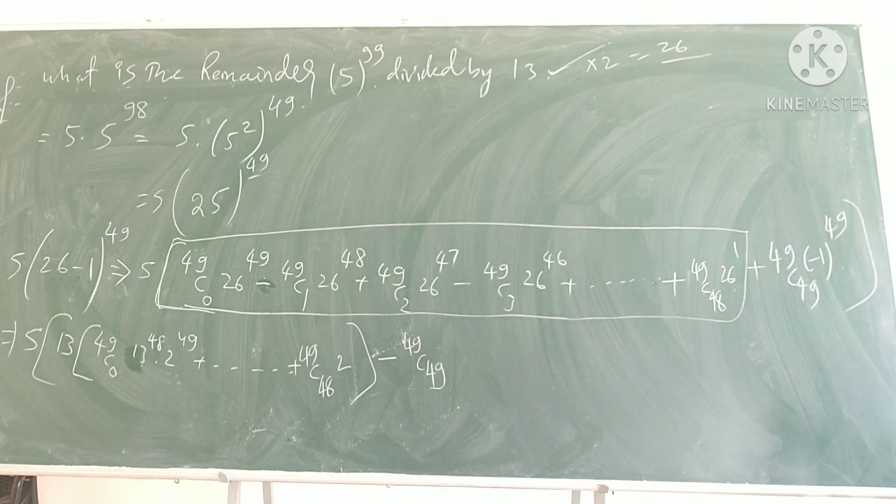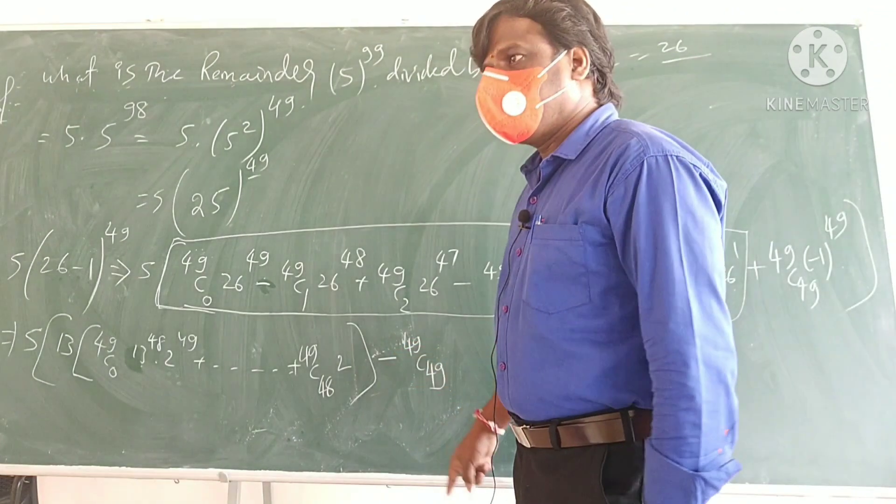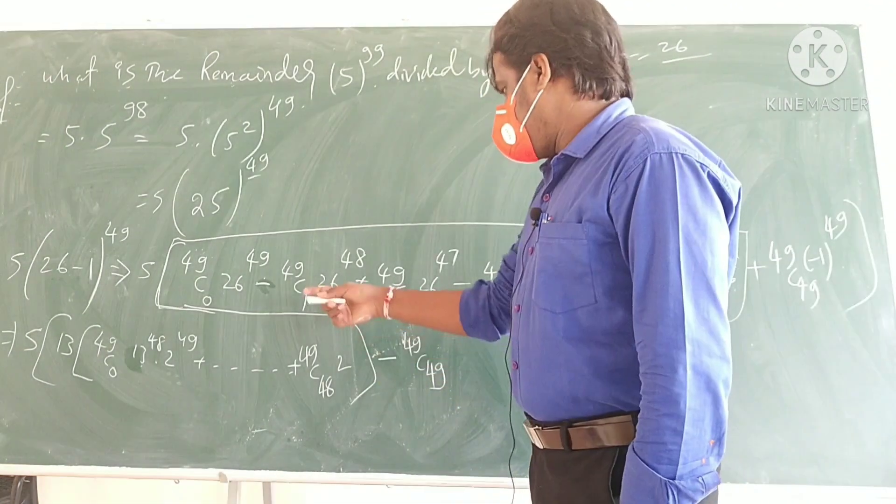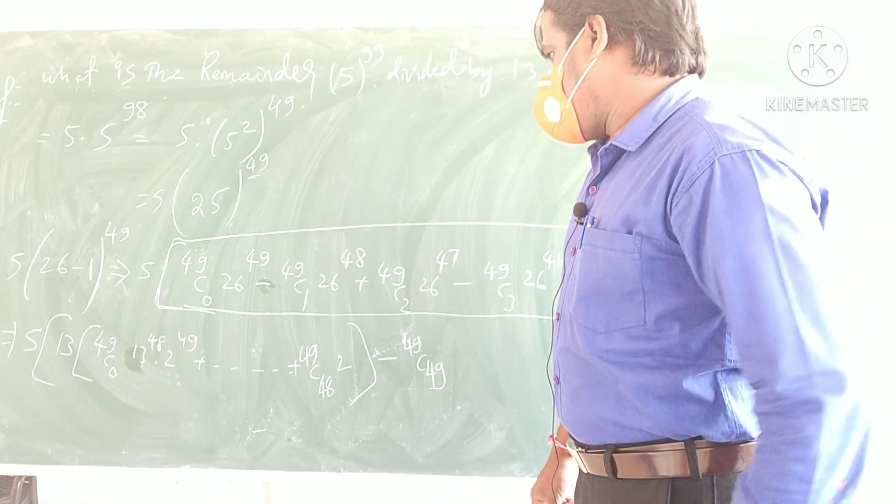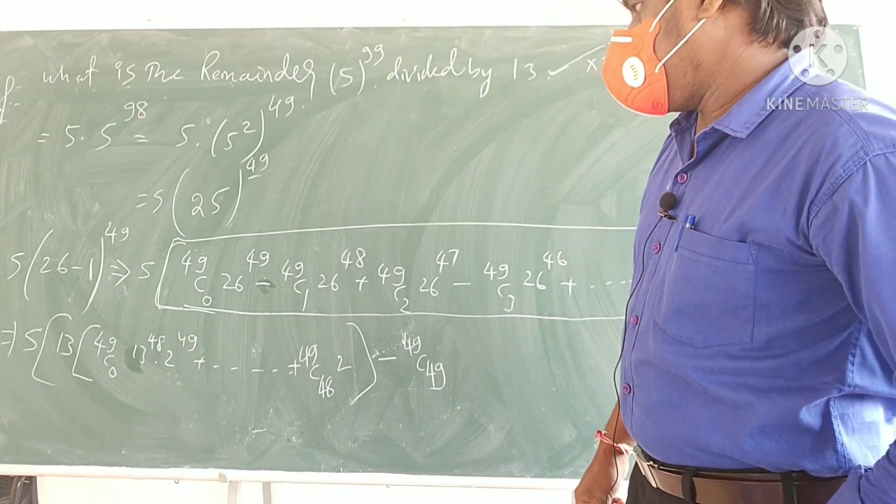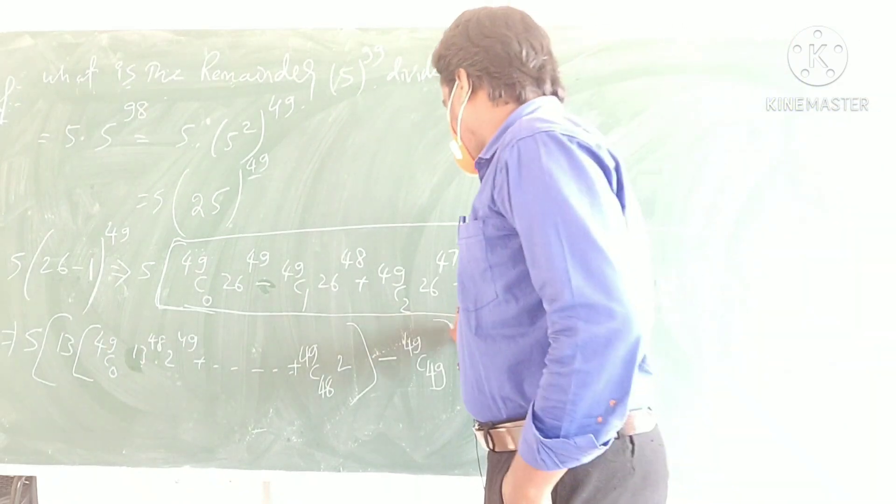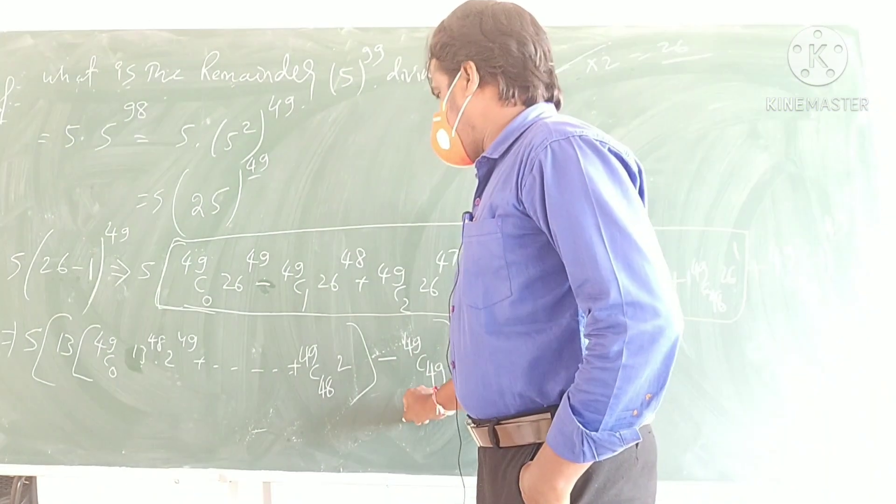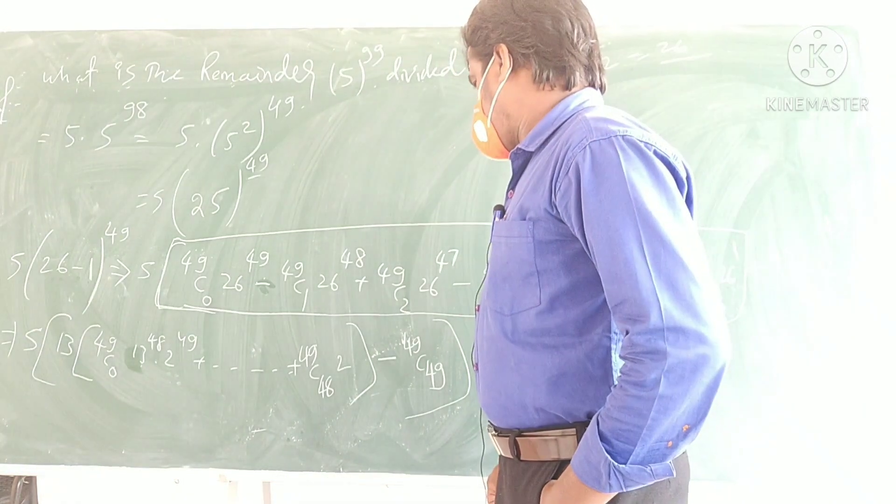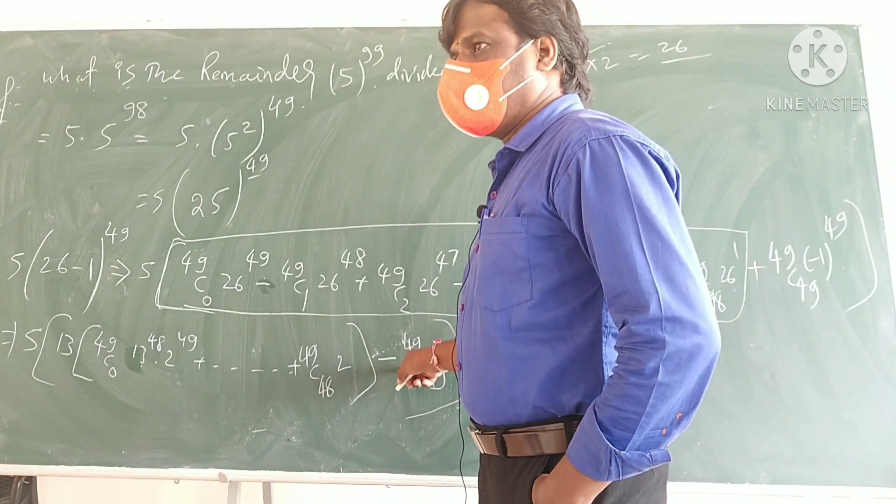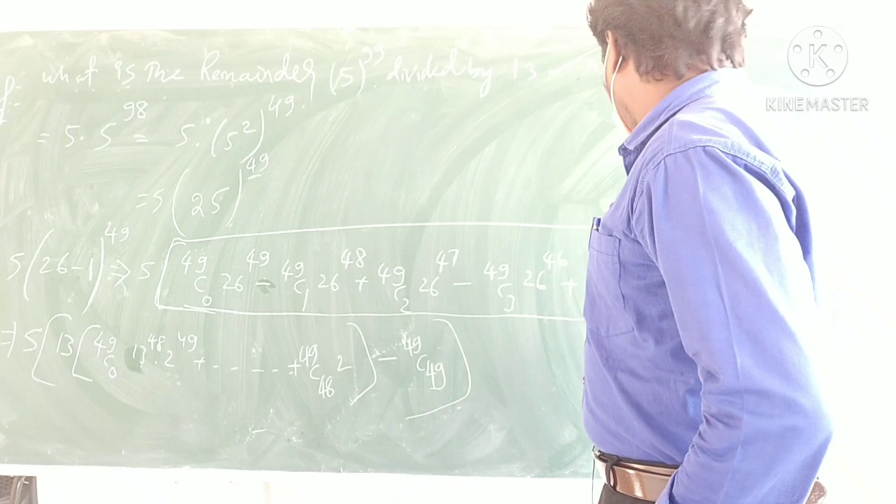So, what I got right now, this value is 1, right, this value is 1, it is a multiple of all, so, 5 into 1 minus 5, no, 13 into 5, 5 is multiplying overall, right, 5 is multiplying complete, but you are getting minus 5, right, minus 5, minus 5, you are getting.